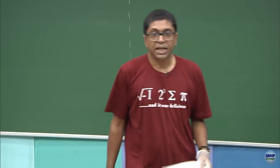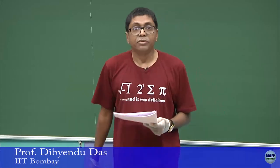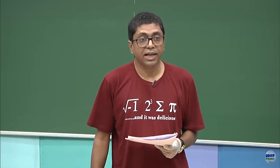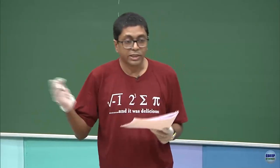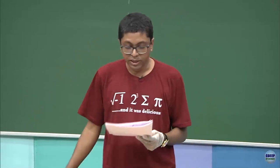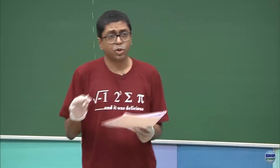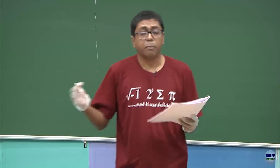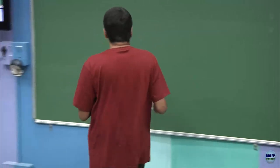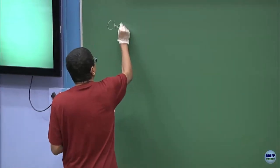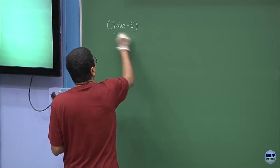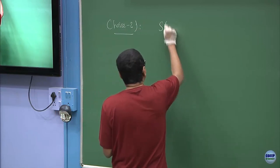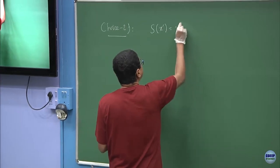We would continue the discussion that we started in last class. We started with this generalized Rodrigues formula and made an assumption that the function s(x) is a 0th degree polynomial or a constant and got the Hermite polynomial. In this sub-lecture, I will assume that it is linear and let us see what we get. It will turn out we will get a so-called Laguerre polynomial. This I will call as Choice 2: S(x) is a linear function.